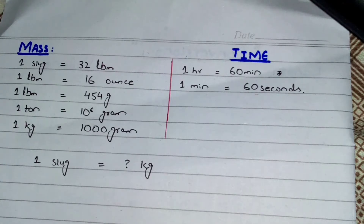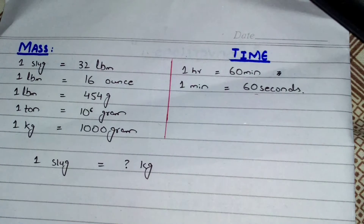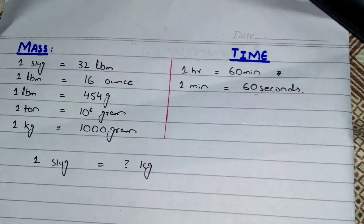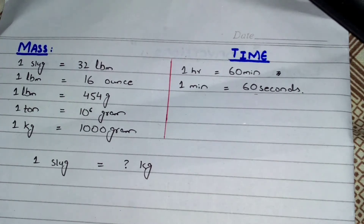Dear students, assalamualaikum. In today's lecture video we are going to do unit conversion of mass and time. Here are some of the unit conversions of mass and time that you must remember while converting. The units of time are very simple: hours, minutes, and seconds — these are the common units of time.